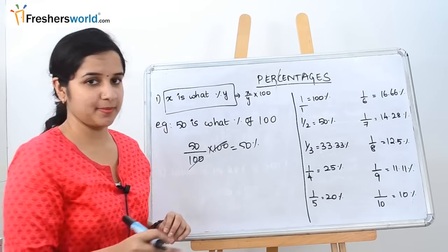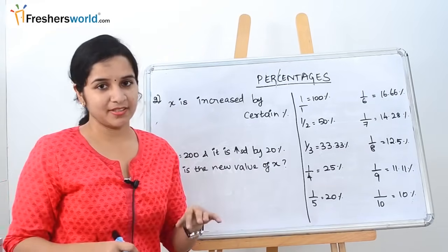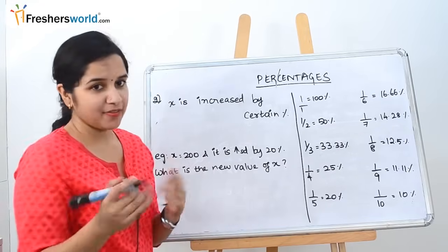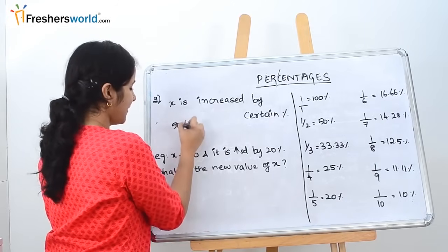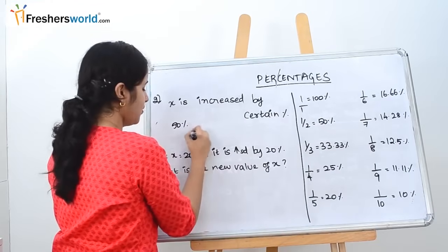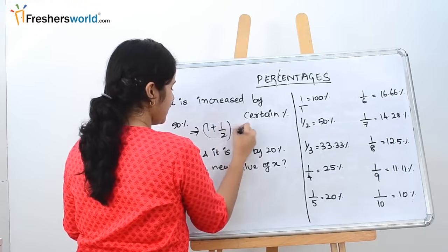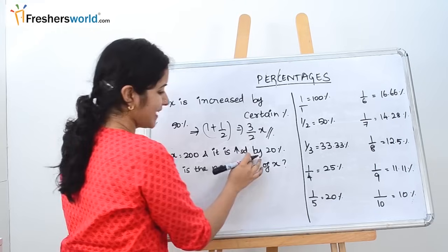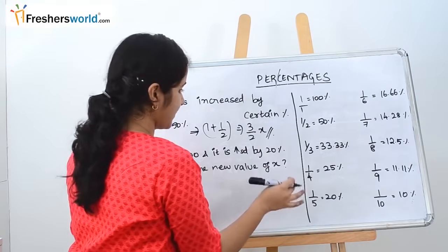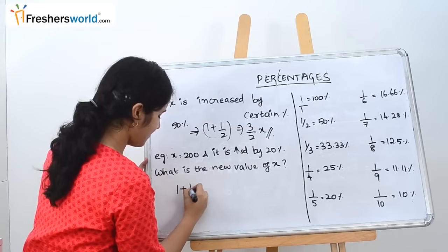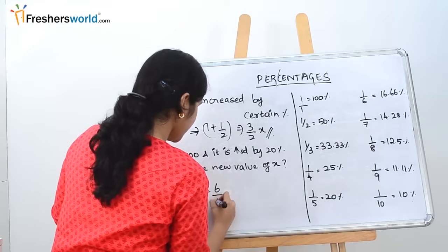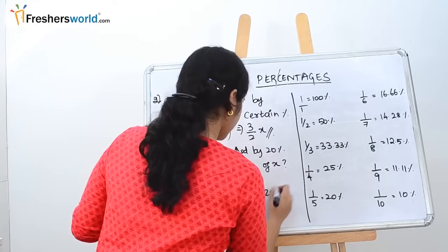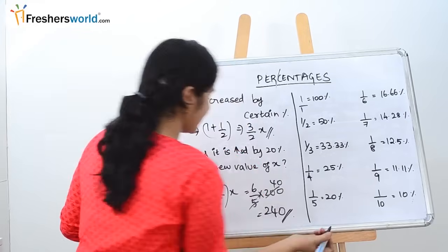The second type is: x is increased by a certain percentage — find the new value of x. For example, x is increased by 50%, and 50% = 1/2, so the new value is (1 + 1/2) = 3/2 of x. Let's take x = 200 increased by 20%. 20% = 1/5, so the new value is (1 + 1/5) = 6/5 of x. That gives 6/5 × 200 = 240. The new value of x is 240.